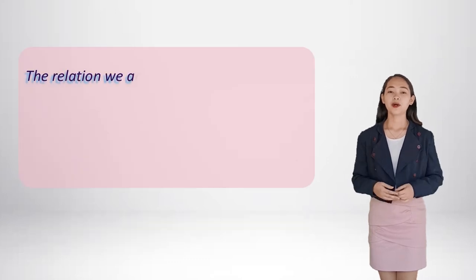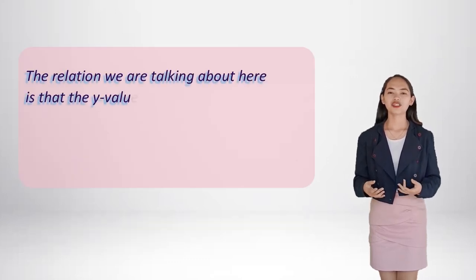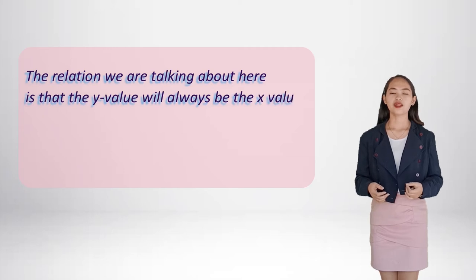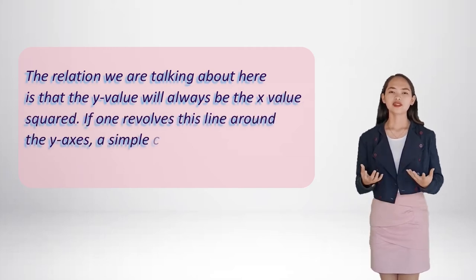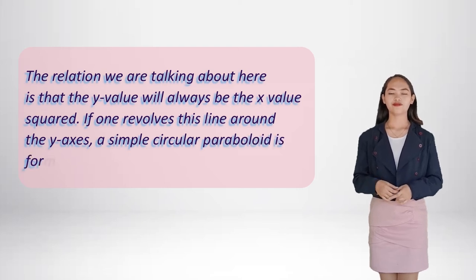The relation we are talking about here is that the y value will always be the x value squared. If one revolves this line around the y axis, a simple circular paraboloid is formed.